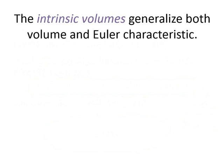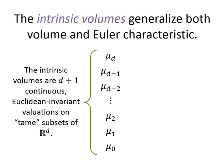The intrinsic volumes are examples of valuations that generalize both volume and the Euler characteristic. For sets in d-dimensional space, there are d+1 intrinsic volumes, denoted mu_0 up to mu_d. These are continuous Euclidean invariant valuations. Continuous means that if you modify a set a little bit, the intrinsic volumes don't change very much. Euclidean invariant means that if you apply a rigid motion — translate or rotate a set — intrinsic volumes don't change at all.